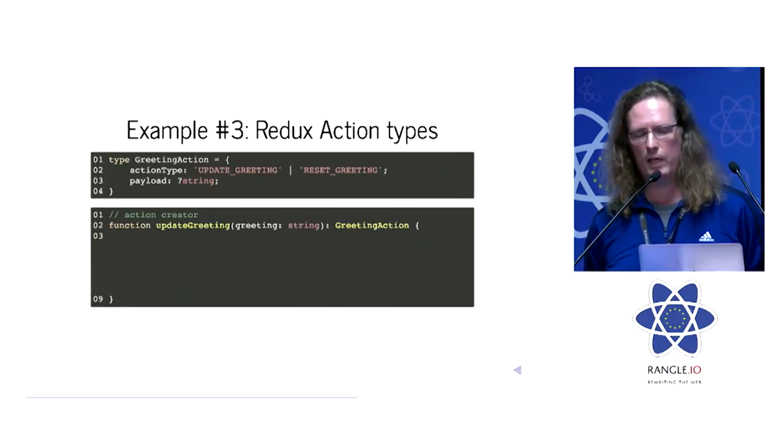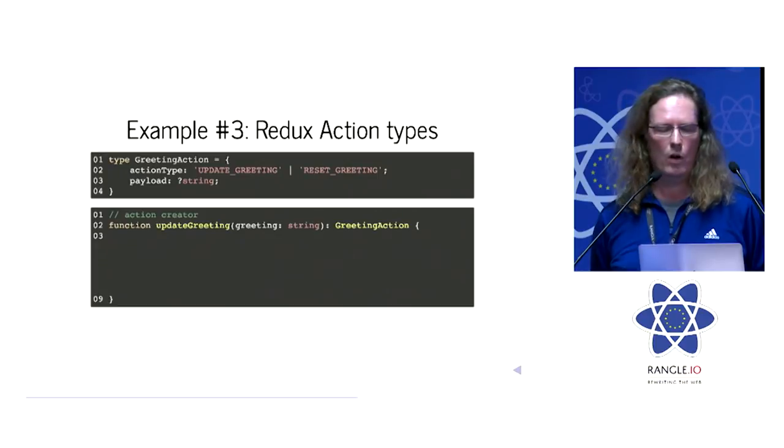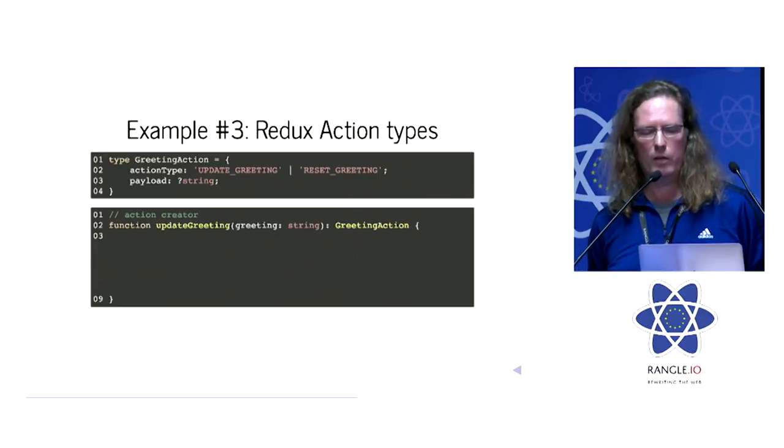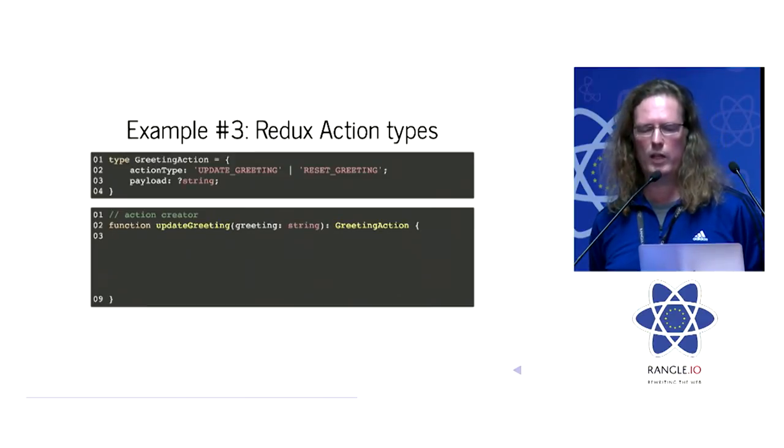A greeting action looks like this. It has two properties: an action type, which might either be a string update greeting or reset greeting. And it also has a payload, which is a string, but the question mark in line three there in front of the string tells you that it is optional. It may be null or undefined.